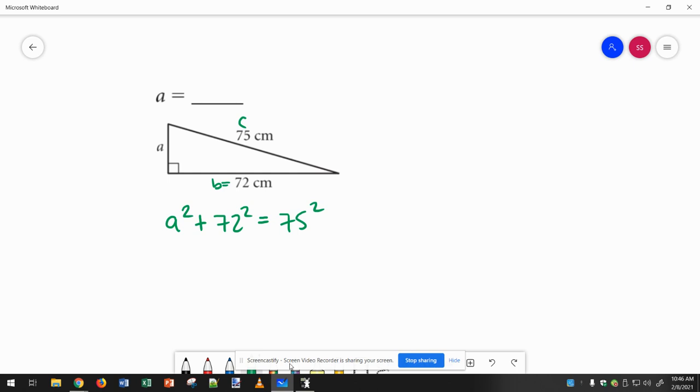So, before we go to the calculator, we could recognize this situation where we're going to have to subtract. And we can do this all in one step. A squared, and then just do 75 squared minus 72 squared, and then whatever that answer is, we're going to have to take the square root of that.